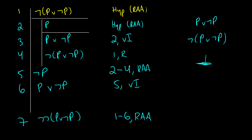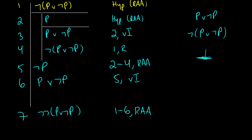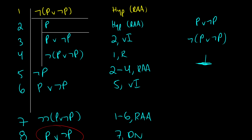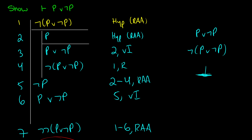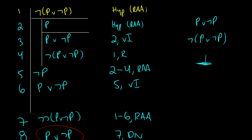Now we scroll down a bit, and in line 8 we use double negation on line 7 to get P∨¬P. As you can see, we're outside the sub-proof now — we didn't need any given assumptions to do this, but we did use hypotheses for RAA that we negated and closed off at each step.